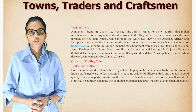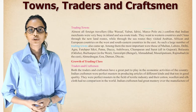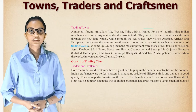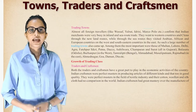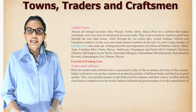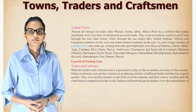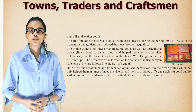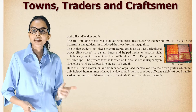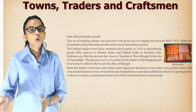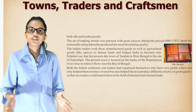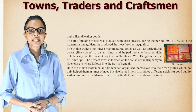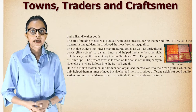Growth of the Trading Class: Both traders and craftsmen played a great part in the economic activities of the country. Indian craftsmen were perfect masters in producing articles of different kinds in good quality. They excelled in the textile industry — their cotton, woolen, and silk cloth had no comparison in the world. Indian craftsmen had great mastery over the manufacture of silk and leather goods. The art of making metals was pursued with great success during the period 800 to 1707 CE, with ironsmiths and goldsmiths producing the most fascinating quality work.